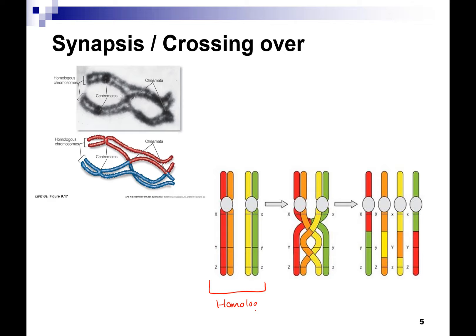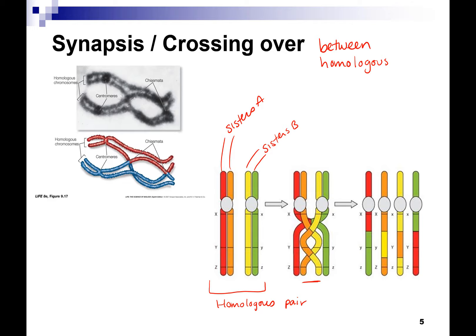Here we have a homologous pair, and we have our sisters, which are identical — we'll call them sisters A and sisters B. Crossing over happens between homologous chromosomes, not between sister chromatids. Because sister chromatids are identical, that wouldn't give you any genetic diversity. So crossing over is the key to genetic diversity.